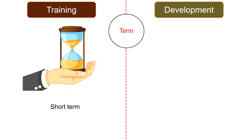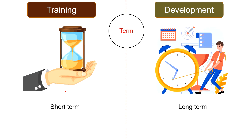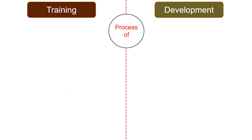Term: while training is short term with a concrete goal and fixed duration, development is a continuous activity with open-ended goals, making it long term. Development takes place throughout the life of a person — while training is time-bound, development is lifelong.